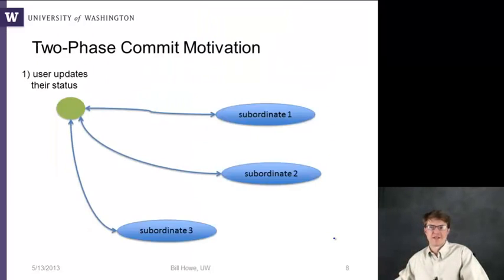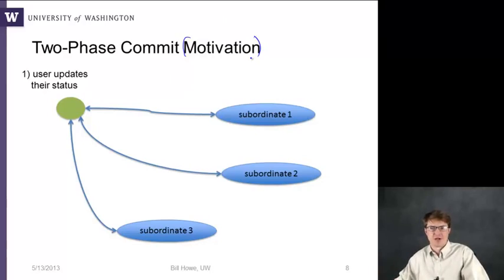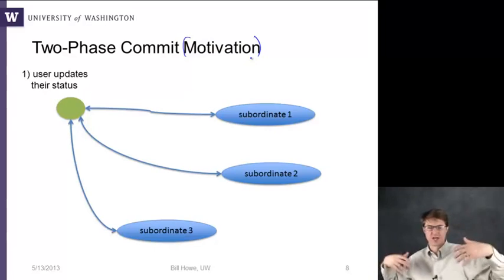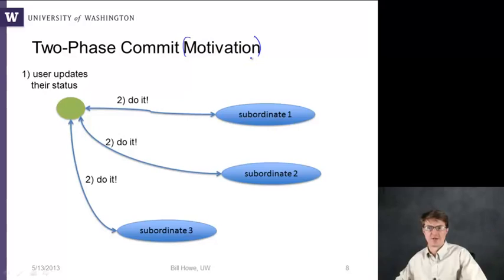How did databases solve this problem, and why did they take so long? There's a protocol called two-phase commit that's fairly standard for synchronous processing. The motivation: if you want a bunch of replicas or other subordinates to see a change, you make your status update and the servers holding those different friends need to be told of the change. If you just go ahead and tell them to update their internal state to reflect Sue's new status —